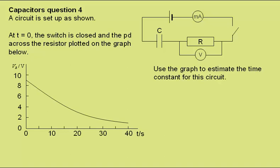Use the graph to estimate the time constant for this circuit. Well the time constant is the time taken for the charge or in this case the potential difference to drop to 1 over e or roughly a third of its initial value.